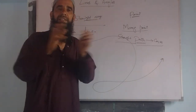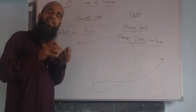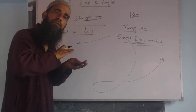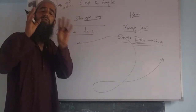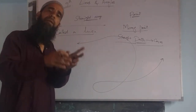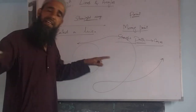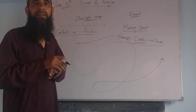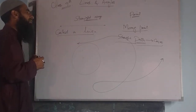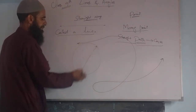Now we take a surface. If we have a surface, and the line lies on that surface — if we have a surface and we can draw this line on that surface — then that surface is called a plane. So that surface we call a plane.